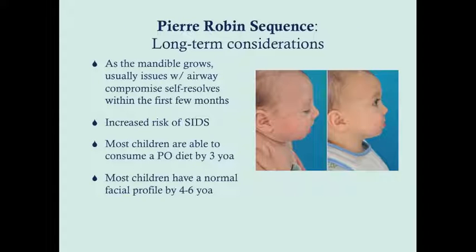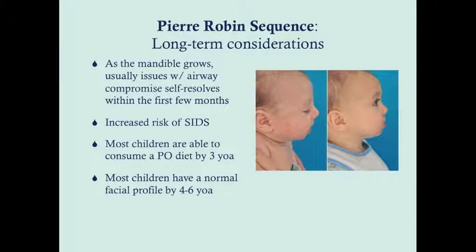Long term, as the mandible grows, airway issues usually self-resolve within the first few months, though there is an increased risk of sudden infant death syndrome because of the airway issues. Most children are able to consume a PO diet by three years of age, and most will have a normal facial profile by four to six years of age, sometimes with surgical assistance. As shown here, this child had surgery and has a much more normal facial profile at this point.